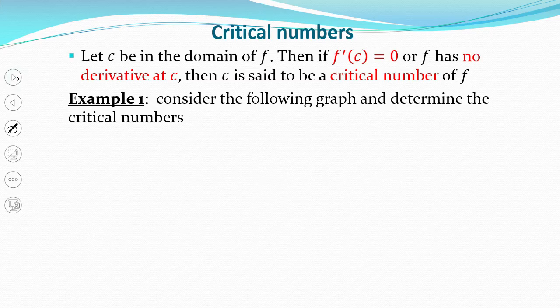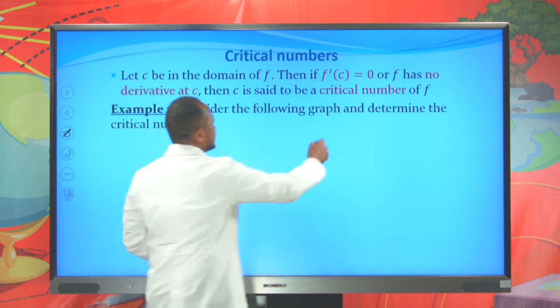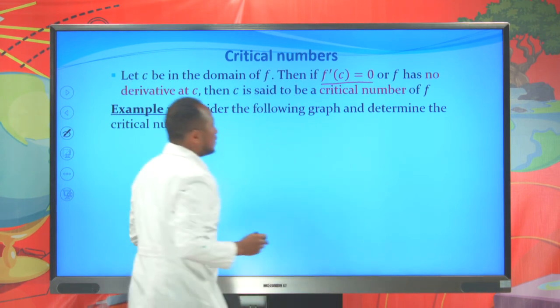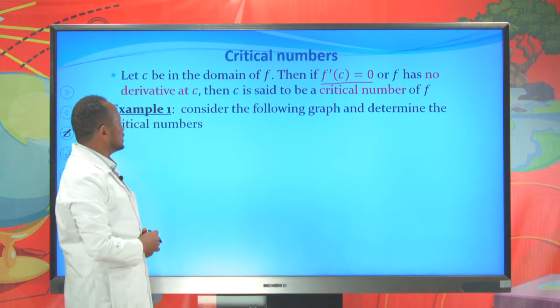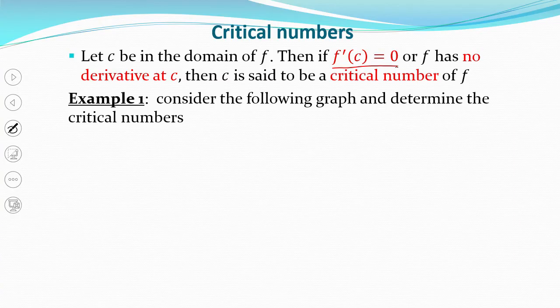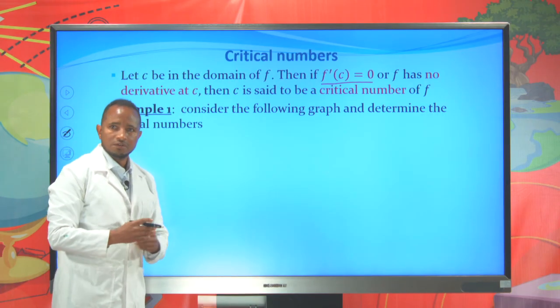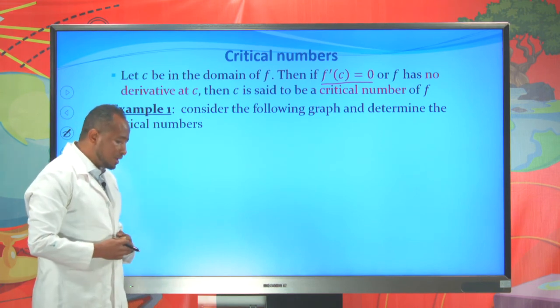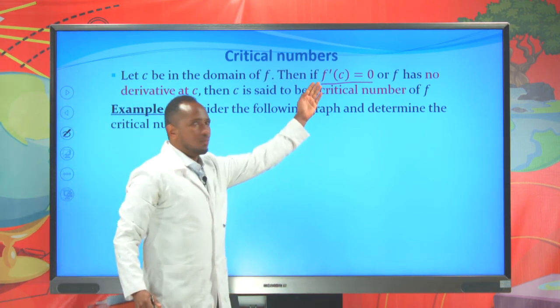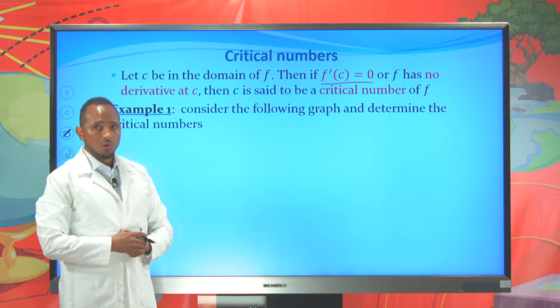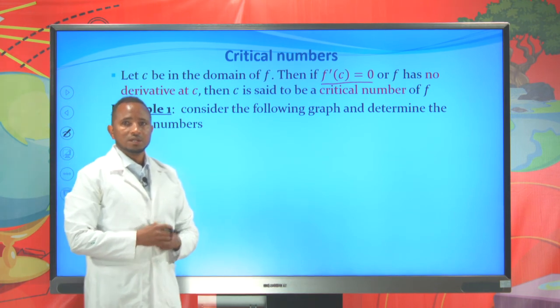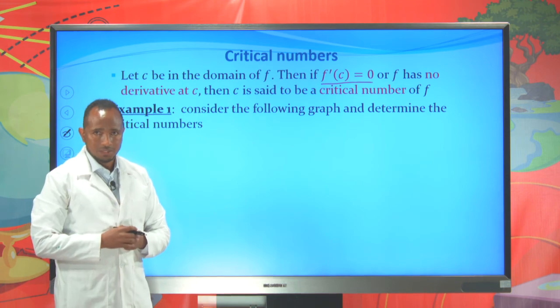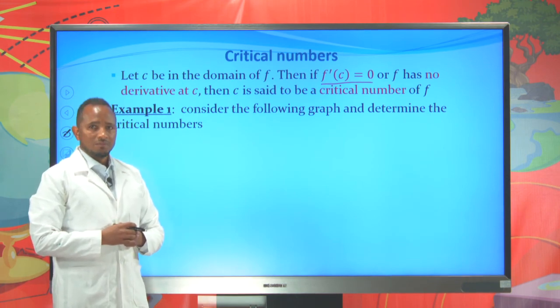Let C be in the domain of F. If the derivative of F at C is equal to 0, or F has no derivative at C, then C is said to be a critical number of F. Given a function, to determine the critical number, you simply need to find the point where the derivative of that function is 0, or the point where the derivative of that function does not exist. Let's see an example for this.